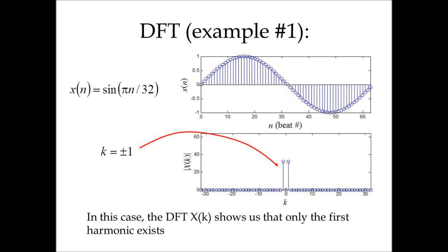This is the first example of how the DFT works. In the upper panel, we take a very simple harmonic function — sine of πn divided by 32 — which means that in 64 beats this signal has exactly one period. As a consequence, when you look at the spectrum X(k), the DFT transform of the signal, you can see that only the +1 and -1 components appear, which means that only the first harmonic exists.